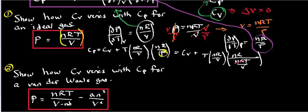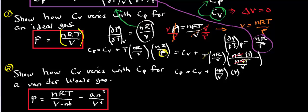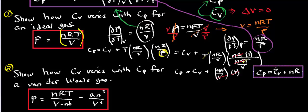Notice that the nR in the numerator cancels with the nR in the denominator, and the temperature T cancels as well. Rewriting, we have nR/V times V — the volume cancels — so what we actually find is that Cp is equal to Cv plus nR. This is one way to write this formula. If you're given Cv and want to find Cp, all you have to do is add nR.